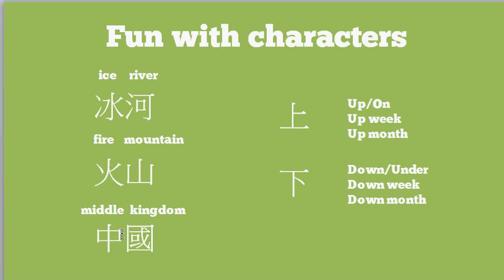This one is interesting because this is the character for 'middle' and this is a character for 'kingdom' or 'country.' You may have heard this before, but China is known as the Middle Kingdom, and these are the characters that signify the country of China. Over here on the right we have two interesting characters — two of the first characters I learned along with 'middle.' When I first went to China about 30 years ago, on the train in the sleeping cars there were three berths on each side: an upper berth, a middle berth, and a lower berth. You had to read your ticket and match it up, so those are some of the first characters I learned in Chinese.